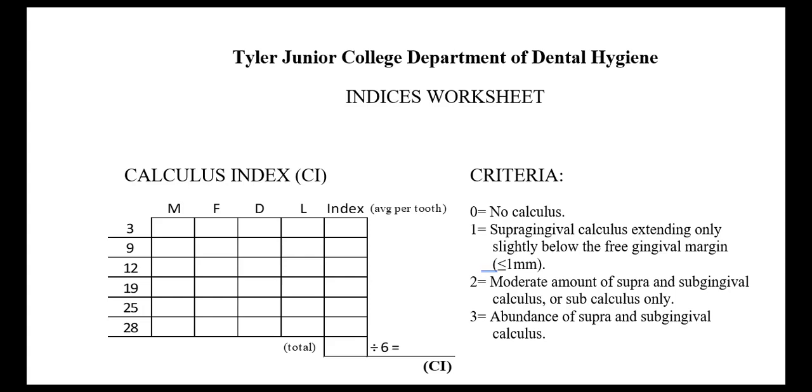You can apply that knowledge to the other two indices. Let's look at the criteria for the calculus index. Each of the indices have their own criteria, but they're all similar. We're going to have a zero, which is no calculus. A one means there is supra calculus, maybe slightly below the margin, basically mild calculus.